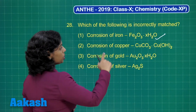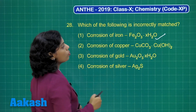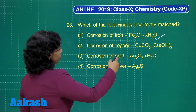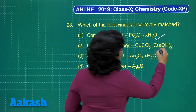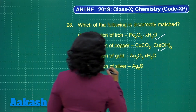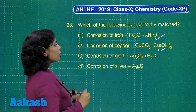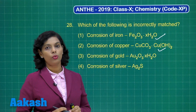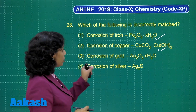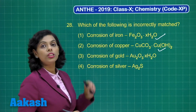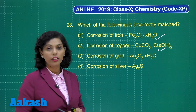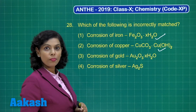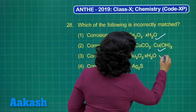Corrosion of copper: formation of basic copper carbonate, CuCO3·Cu(OH)2 — this is also correct. If I talk about gold, it does not corrode and will not react with oxygen and moisture. This means this is an incorrect match — I'll just mark a cross over here.